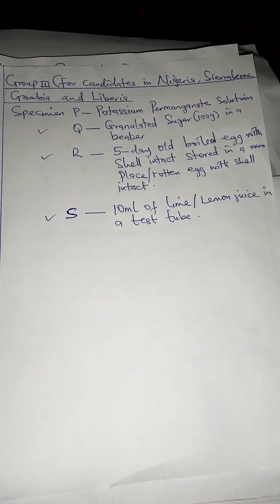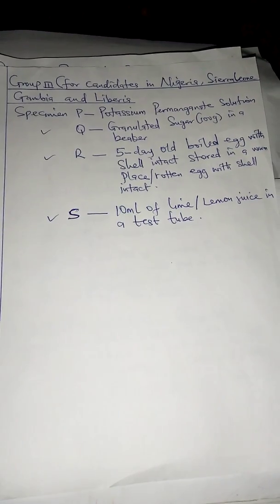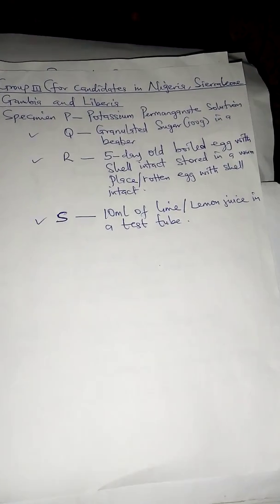Group III for candidates in Nigeria, Sierra Leone, Gambia, and Liberia. Specimen P: potassium permanganate solution. Specimen Q: granulated sugar, 100 grams, in a beaker.